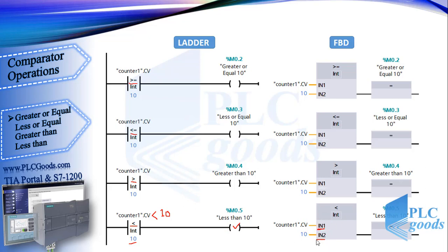For example, see the last line — when the counter value is less than 10, this output will be on. Pay attention: for these instructions, if we exchange inputs the program logic will be changed. To prevent any mistake, place the first input on the left side of the comparator sign and the second input on the right side, to see their mathematical expressions.